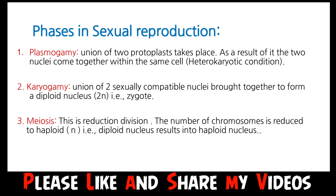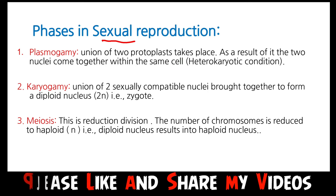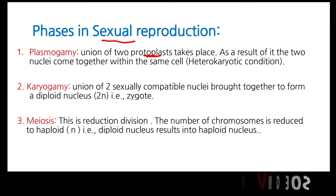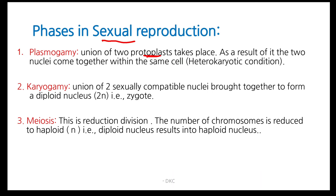Phases in SR. There are three phases: Plasmogamy, Karyogamy, and Meiosis. Plasmogamy is the union of two protoplasts resulting in the formation of a heterokaryotic condition. Karyogamy is the union of two sexually compatible nuclei and formation of a diploid nucleus. Meiosis is the reductional division, thus the number of chromosomes is reduced to haploid.